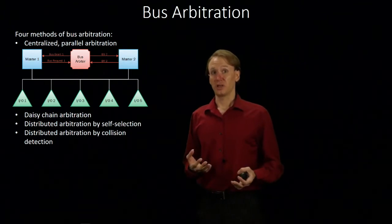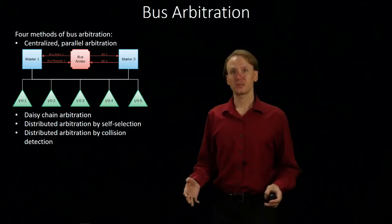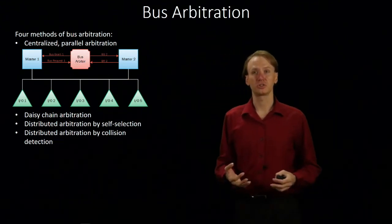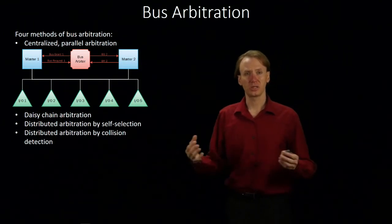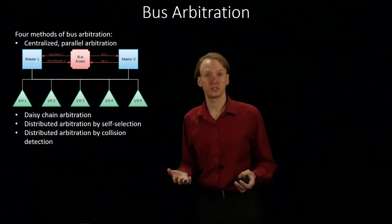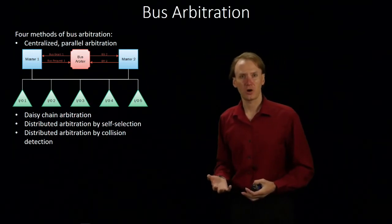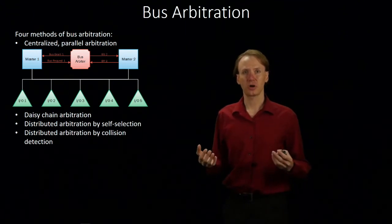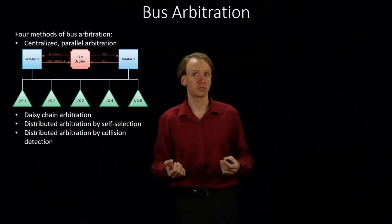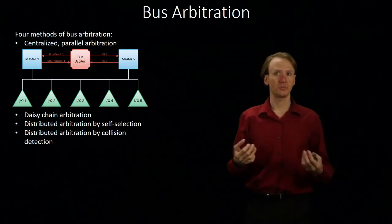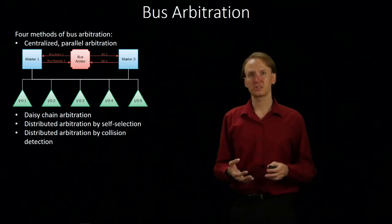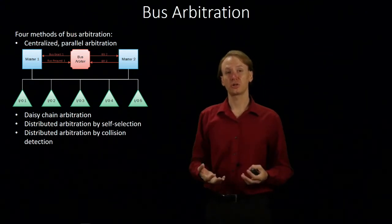There are also a couple of distributed methods we could use. Both centralized methods require a bus arbiter physically placed in the machine, but sometimes we can't do that. We might want a distributed arbitration system because we may not have a place to put an arbiter, or we may be trying to communicate between multiple machines that can't contact an arbiter. Distributed arbitration schemes don't have a fixed arbiter — they're set up so that any one of the masters can do the arbitration all by itself.